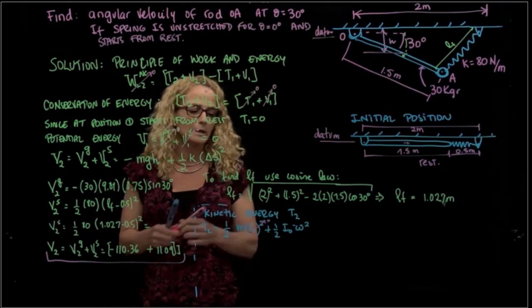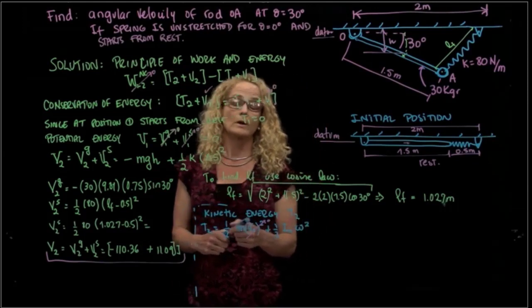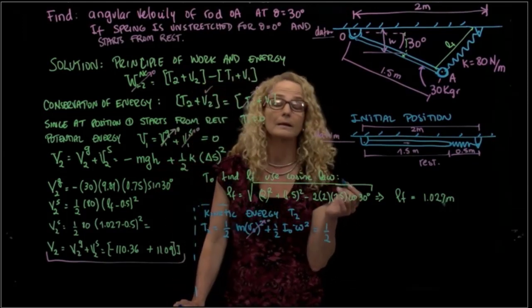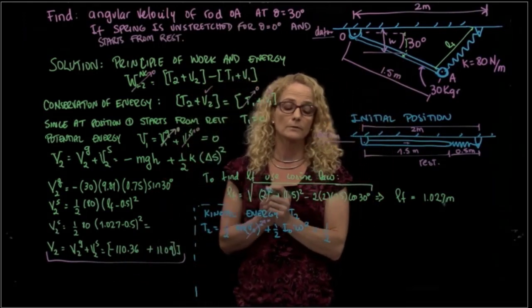So we have only the mass moment of inertia, 1/2, mass moment of inertia times angular velocity squared. And you remember that here in the tables, we have only the mass moment of inertia respect to the center of gravity.